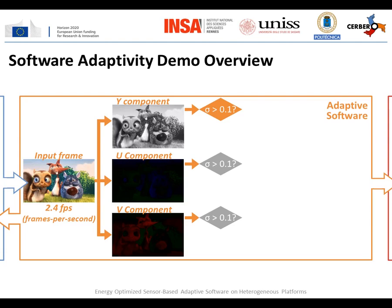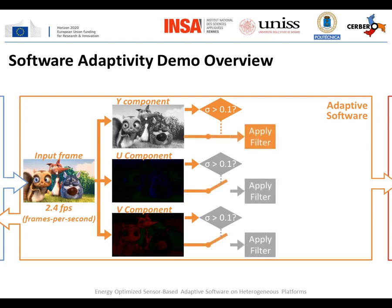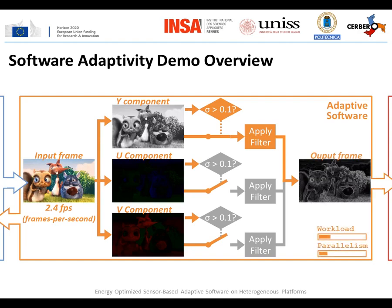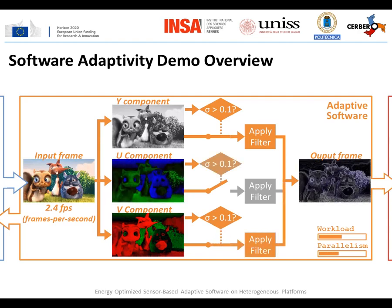The result of this comparison is used to activate image filtering computation only for components containing enough information, like the luminance component in our example. The output image is obtained by merging the filtered components. Since the variance of each color component is re-evaluated for each input frame, reconfigurations may occur and the filtering of color components may be activated or deactivated dynamically, conferring its sensor-triggered adaptive behavior to the software.